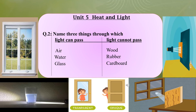First, we will write the names of three things through which light can pass in the left-hand column. I have written: air, water, and glass. Light can pass through air, light can pass through water, and light can pass through glass, as they are transparent objects.